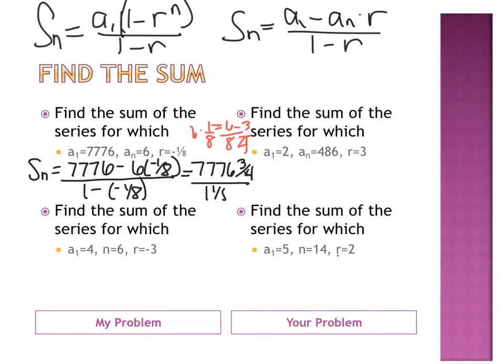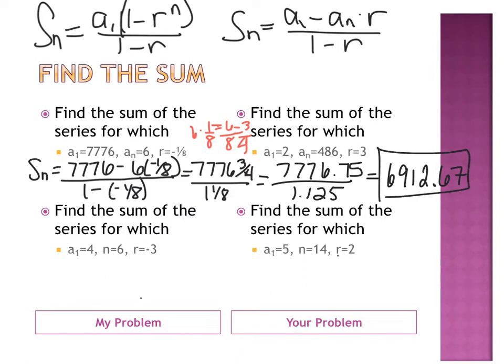Over 1 and 1 eighth, which if you wanted to, you could plug it into your calculator to get decimals. So, we're going to use our calculator here. So let's convert this to some decimals, make it a little faster. 7,776.75, divided by 1.125, and we get something like 6,912.67, and that is our sum of the series.